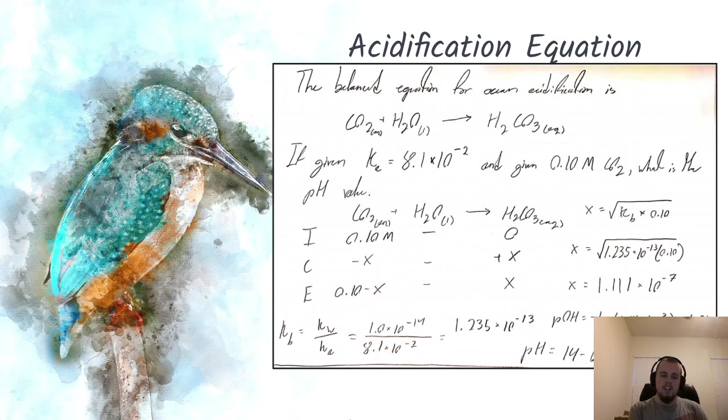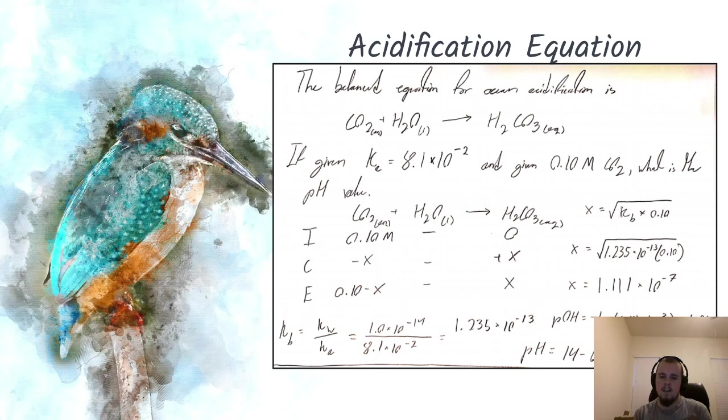I have an equation here that can tell you more about how it works in equation format. The balanced equation for ocean acidification is carbon dioxide mixing with water to yield carbonic acid. If you're given the Ka and the concentration of CO2, from there you can find the pH value. From here you want to set up an ICE table to organize everything for the equation.